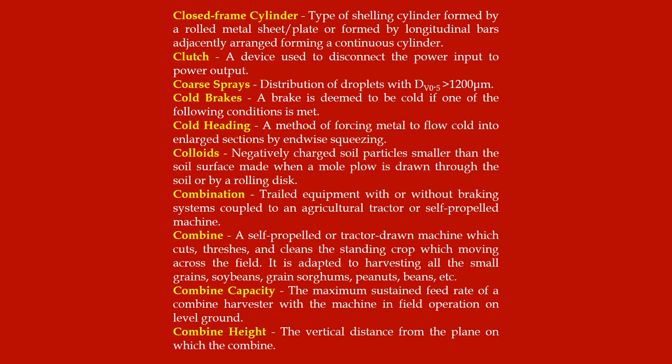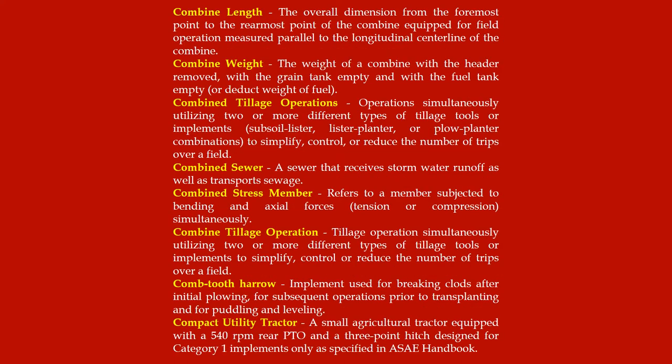Combine capacity: the maximum sustained feed rate of a combine harvester with the machine and field operation on level ground. Combine height: the vertical distance from the plane on which the combine stands. Combine length: the overall dimension from the foremost point to the rearmost point of the combine equipped for field operation, measured parallel to the longitudinal center line of the combine. Combine weight: the weight of a combine with the header removed, with the grain tank empty and with the fuel tank empty, or deduct weight of fuel.